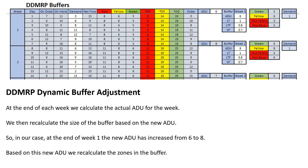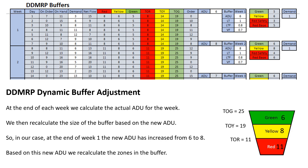As we move through the simulation, we want to dynamically adjust the buffer. At the end of each week, we will calculate the exact average daily usage for that week and resize the buffer for this new ADU for the coming week. In this case, we started off with an ADU of 6, but at the end of week 1, we see the actual ADU was 8, so we resize the buffer for this ADU. The size of the buffer for week 2 is now top of red 11, top of yellow 19, and top of green 25. We do this at the end of each of the 5 weeks.